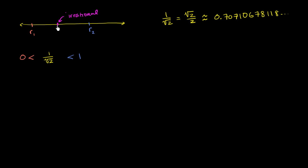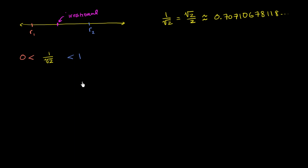The way I'm going to prove that there's an irrational number between any two rational numbers is I'm going to start with this set of inequalities and manipulate it, so I end up with r1 on one side and r2 on the other. From 1 over the square root of 2, I'll construct the irrational number that lies between those two rationals. Instead of the interval between 0 and 1, let's make it between 0 and the difference between the two numbers.